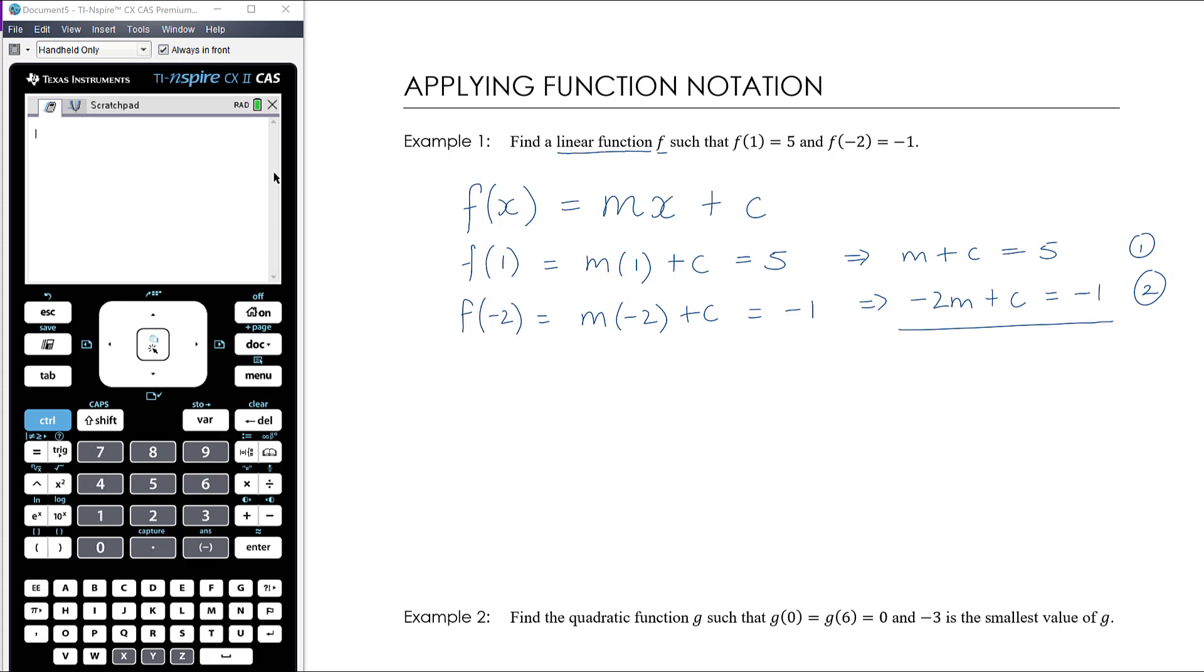We've got c as the same term in both equations, so we can simply subtract these to eliminate c. I'm going to do equation 1 take away equation 2, and we get m minus -2m, so that's 3m. C minus c they eliminate, and 5 minus -1, so that is 6.